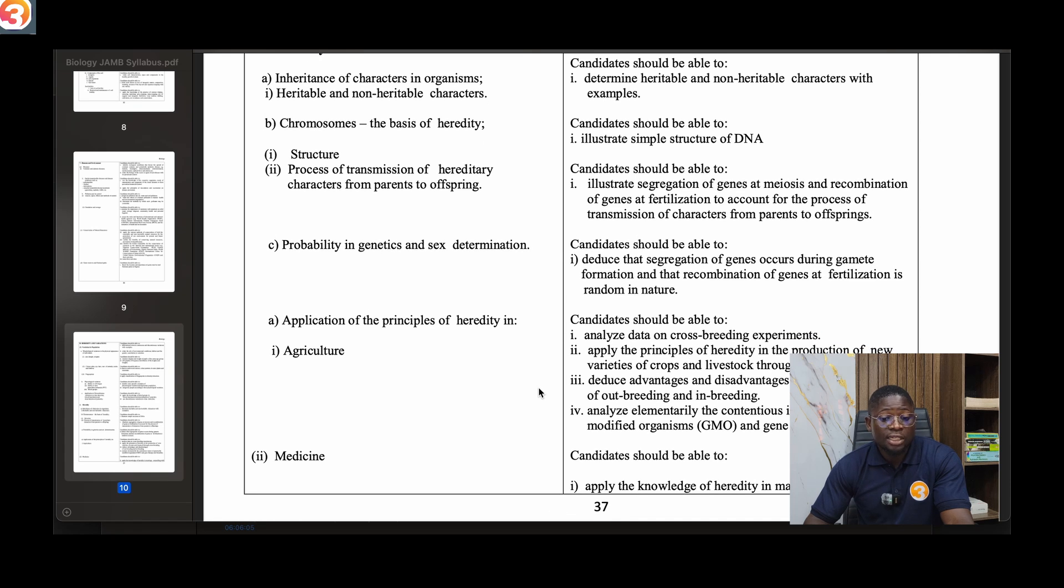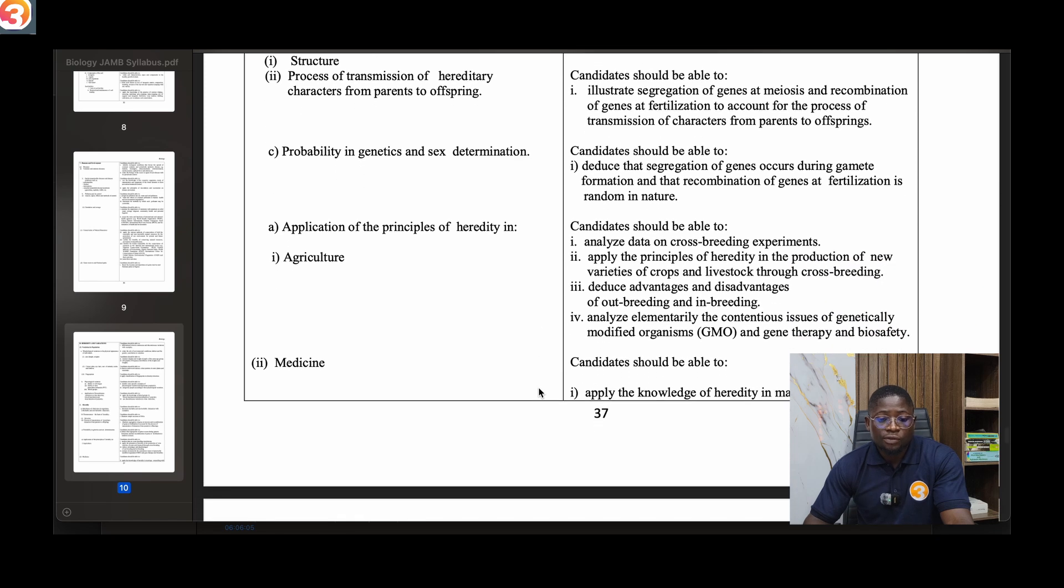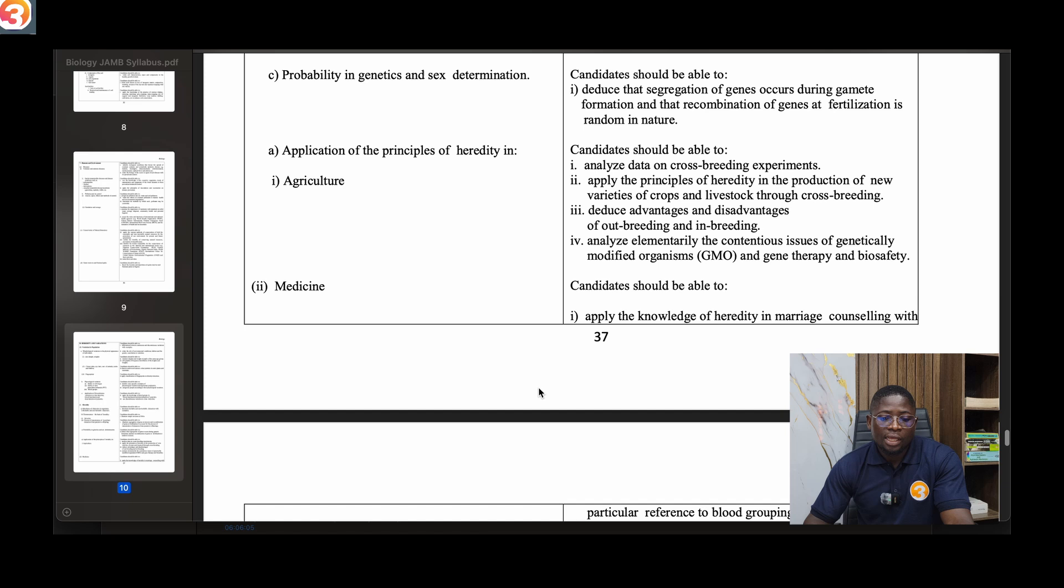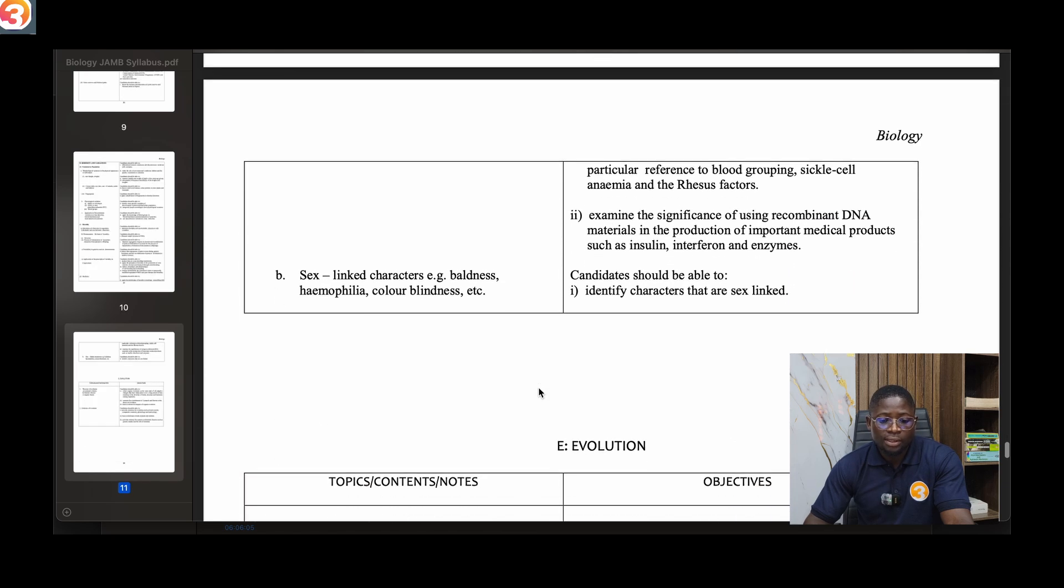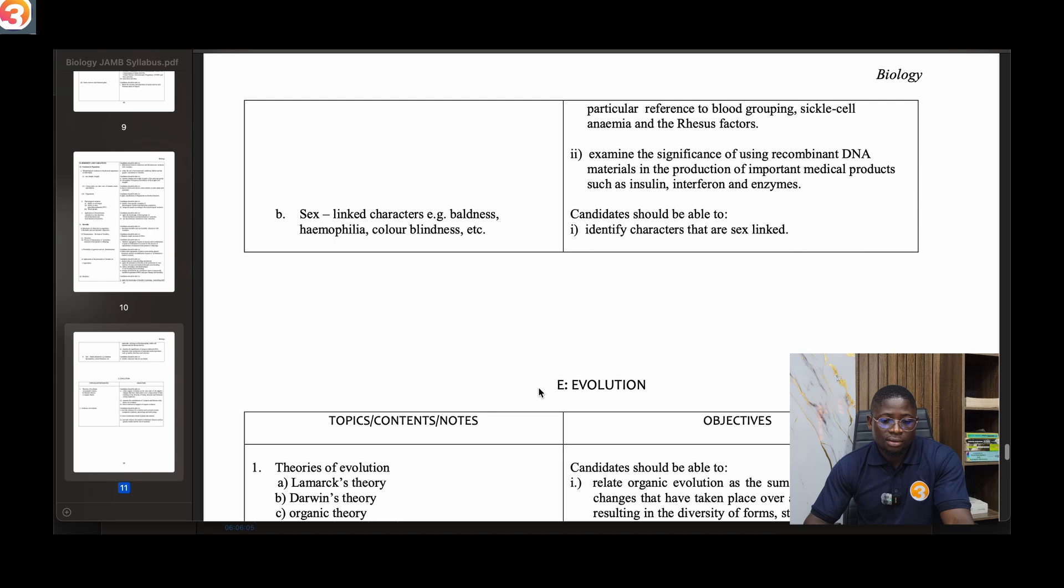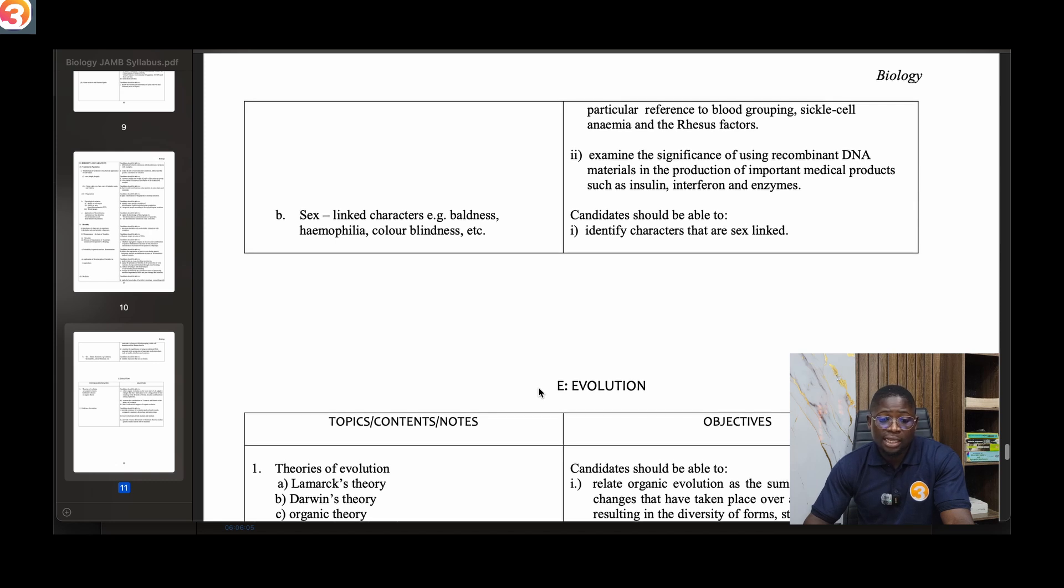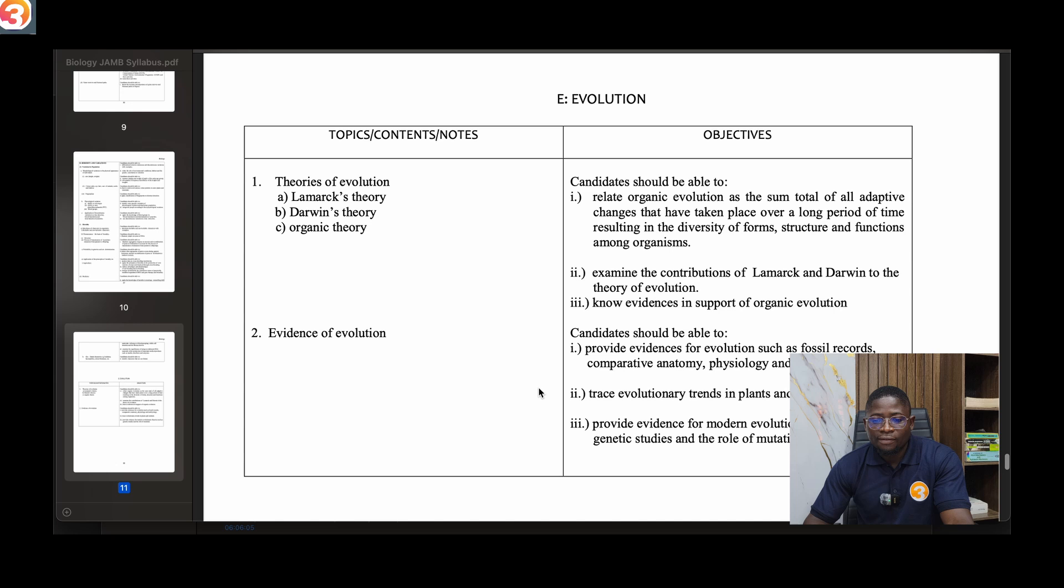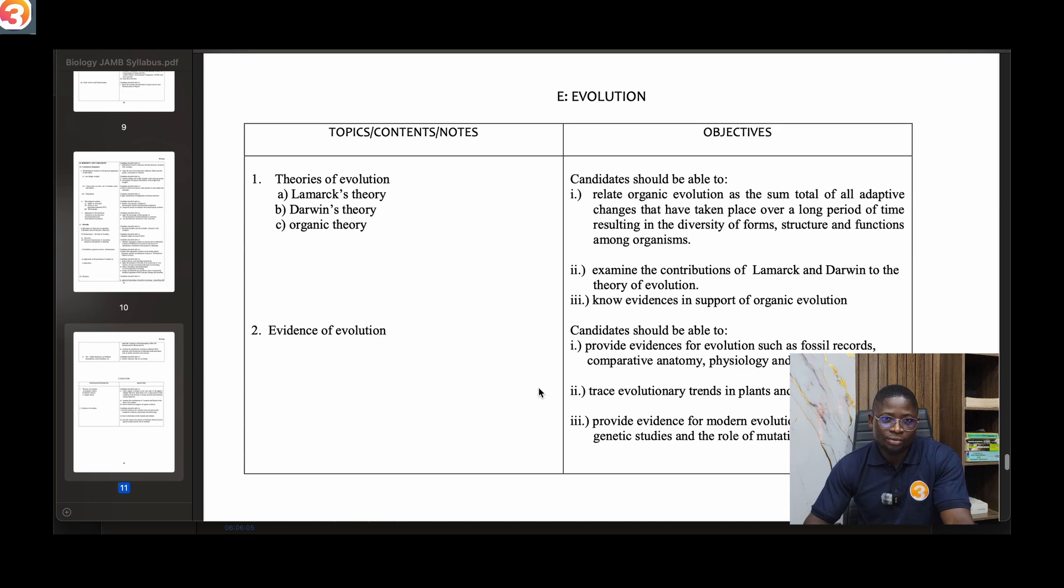Talk about structure, process of transmission of hereditary characters from parent to offspring. Talk about probability in genetics and sex determination. Talk about application of principles of heredity in agriculture and medicine. Talk about sex-linked characters like baldness, hemophilia, color blindness and the likes.